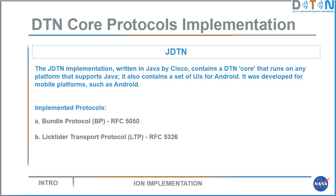The JDTN implementation is a DTN implementation written by Cisco in Java. It contains a DTN core that implements bundle protocol and LTP, runs on any platform supporting Java such as Android, and also contains a set of user interfaces for Android. It was developed mostly for mobile platforms.